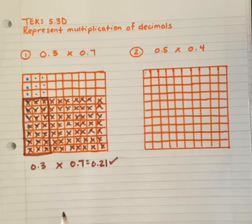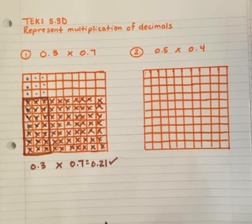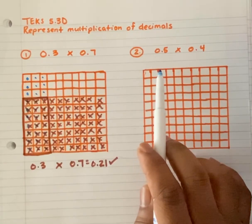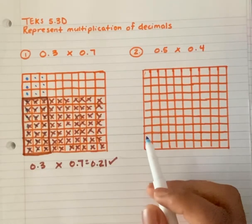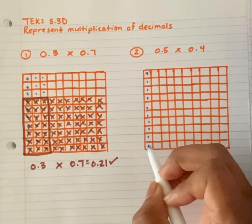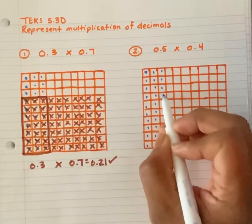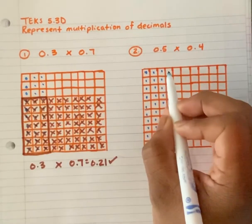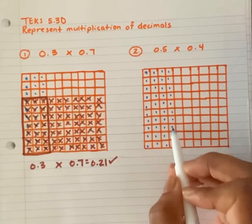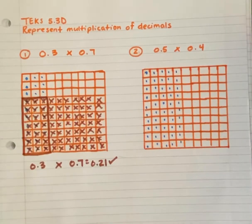Let's try the same thing for number 2: 5 tenths times 4 tenths. What do I do first? I'm going to represent my 5 tenths vertically using circles or dots — 1 tenth, 2 tenths, 3 tenths, 4 tenths, 5 tenths. You could color them in darker or shade them with a pencil.